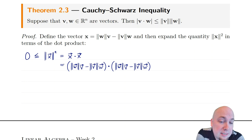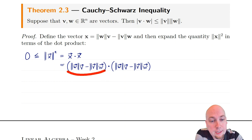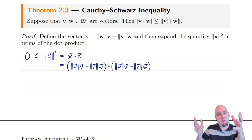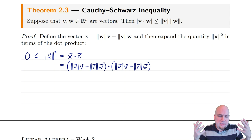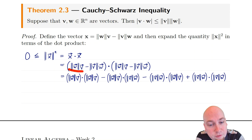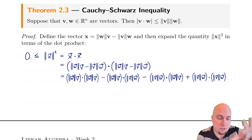Now I'm going to substitute in my definition for x. X is this expression, so it's that expression dot-producted with itself. I can expand that out using the nice properties of dot products — whenever I have a parenthesized expression dotted with a parenthesized expression, I can expand it just like I usually expand multiplication, except the multiplication is now the dot product. So I get: first dotted with first, plus first dotted with second, plus second dotted with first, plus second dotted with second — all possible pairs.